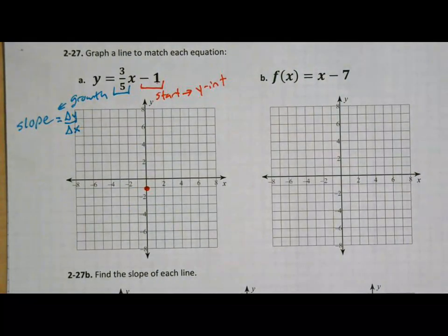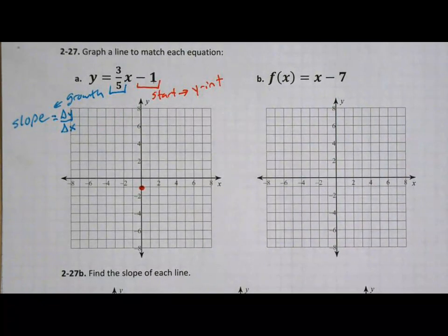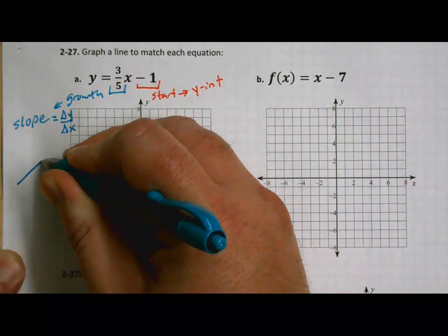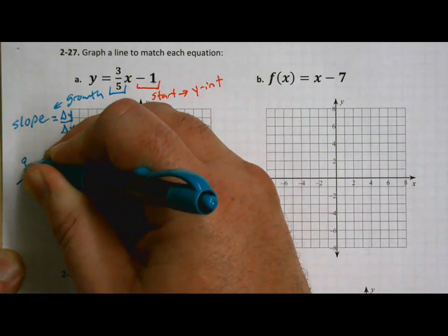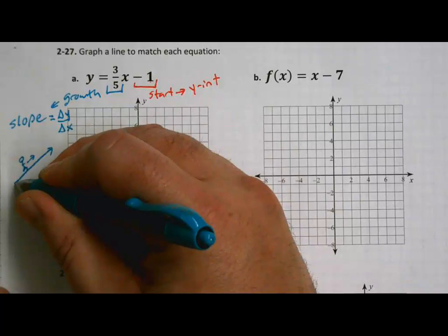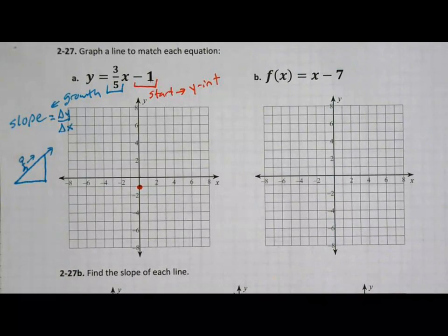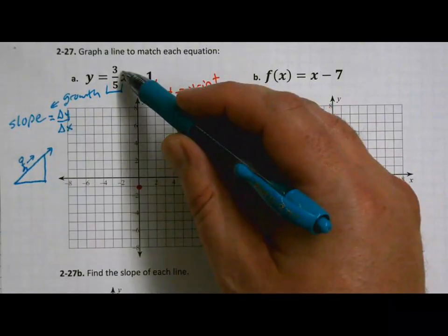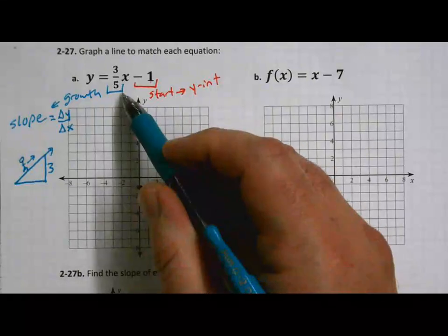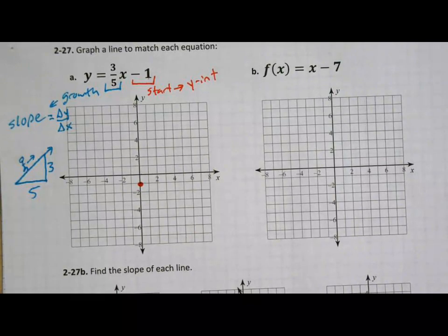Now I want you to notice something about this slope. Is this number positive or negative? Three over five is a positive number. So when we draw our slope, our slope triangle should be going uphill. Remember, positive slopes as we walk from left to right are going to send us uphill. Let's make a sketch of our slope triangle off to the side, then transfer it onto our graph. What is my change in y? Change in y is the number on top — that would be three. Change in x is five. So my change in y over change in x gives me three over five, and that's my slope.